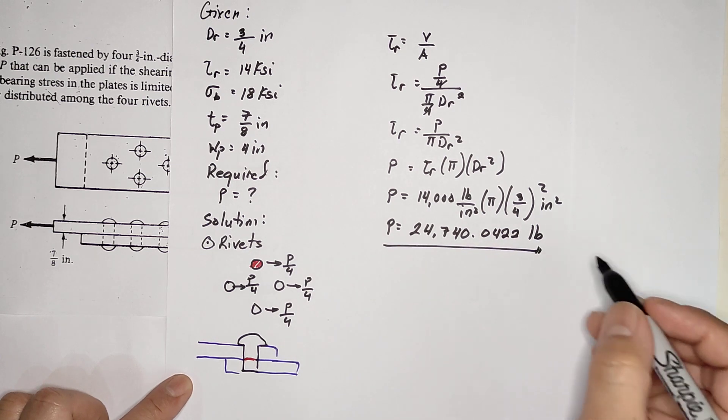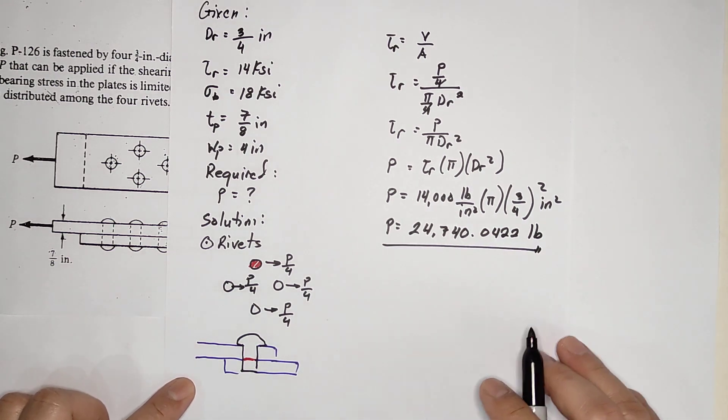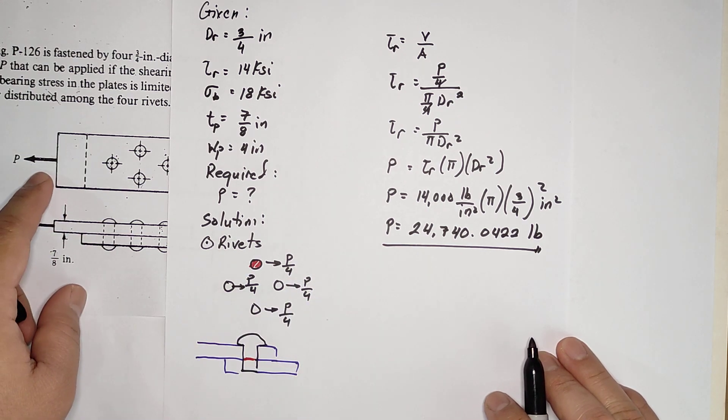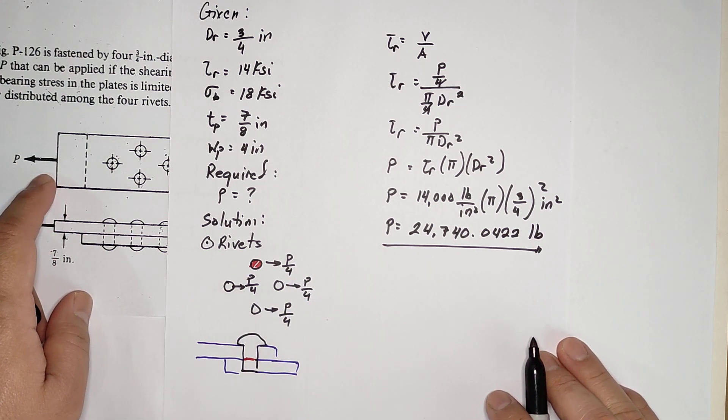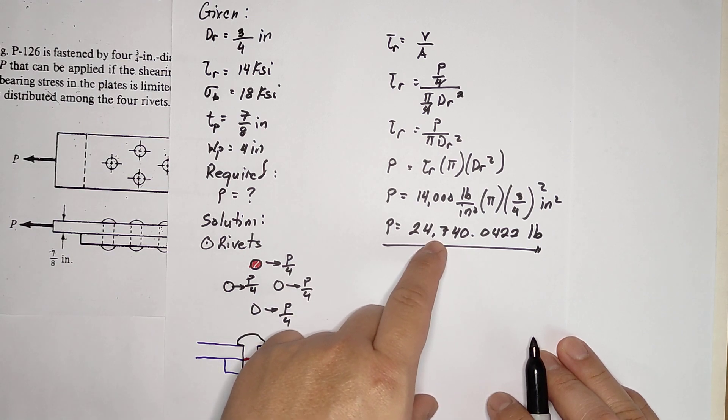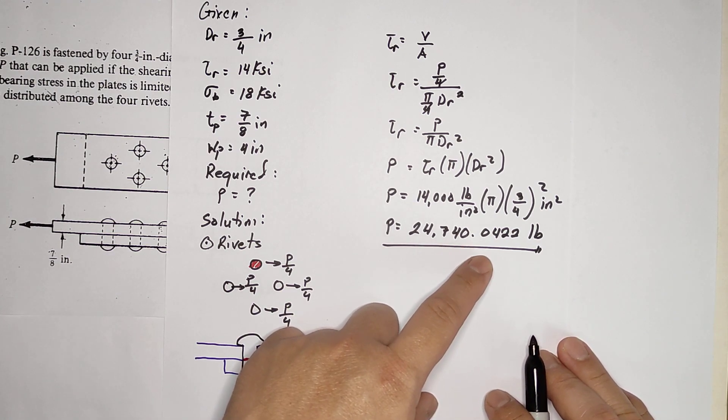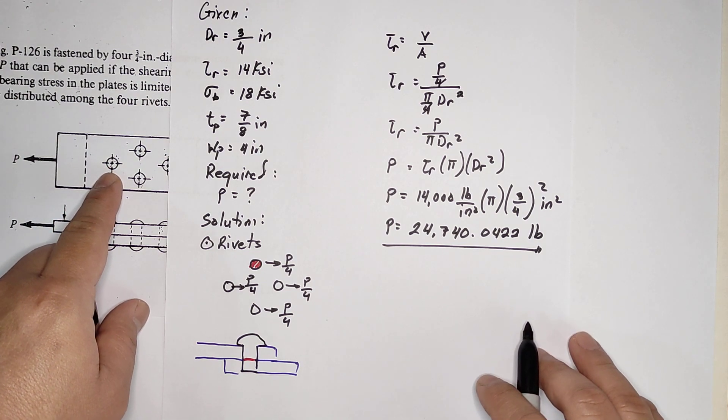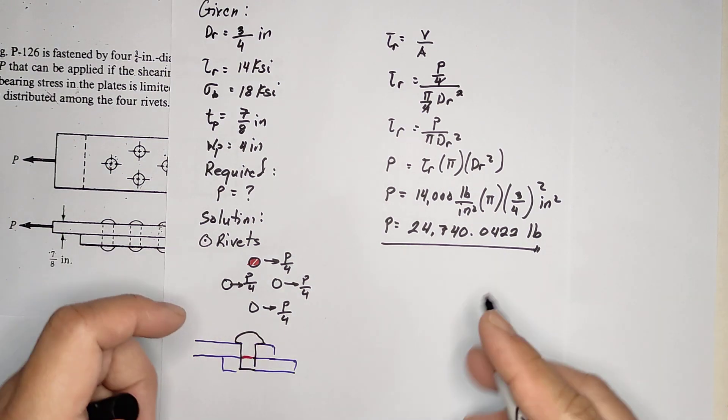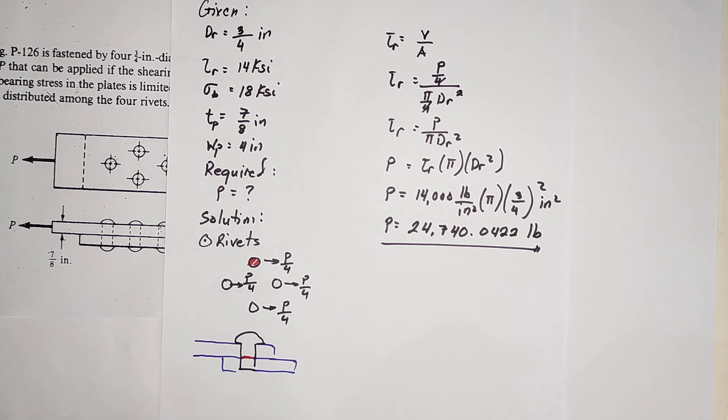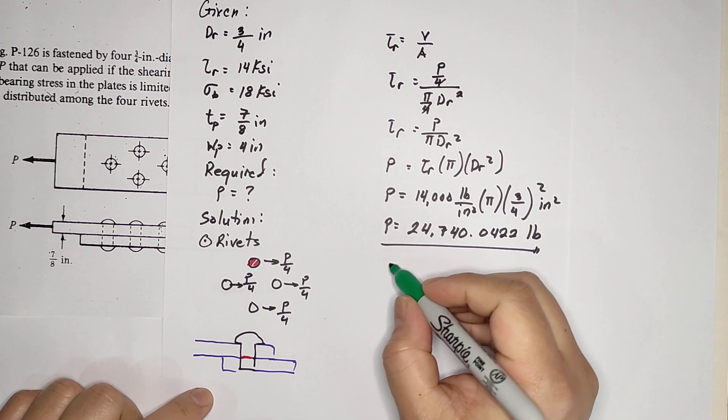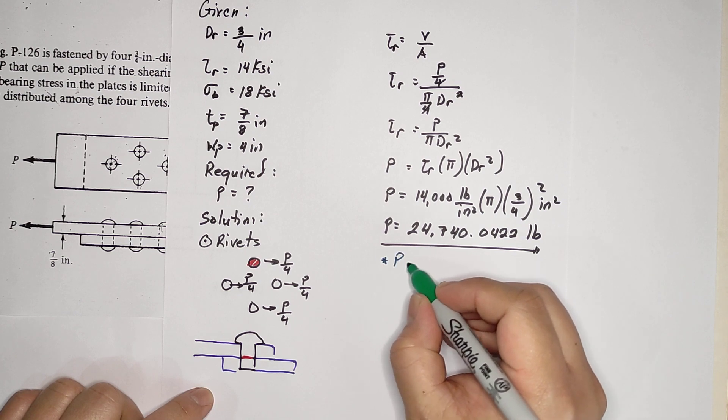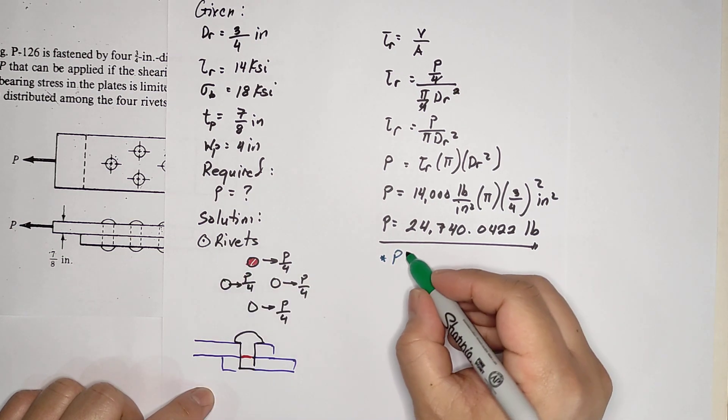For the meantime, let's set the P value - it should be less than 24,740 pounds so that the rivets will not be sheared or break. But let's also look at the plate.